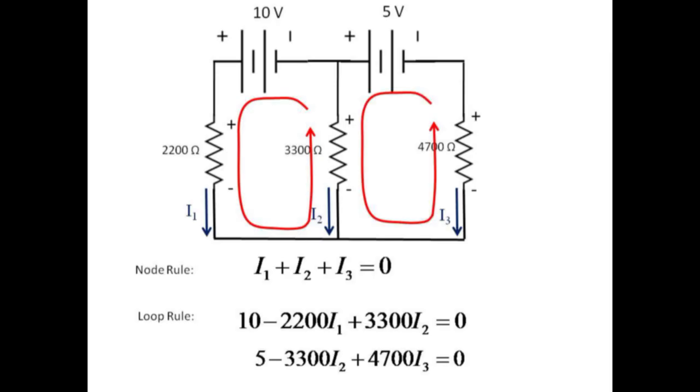Circulating around the second loop gives a gain of 5 volts, a drop of 3300I2, and a gain of 4700I3. We now have three equations for the three unknown currents. Use your favorite linear system of equations solver to perform the math and determine the currents.